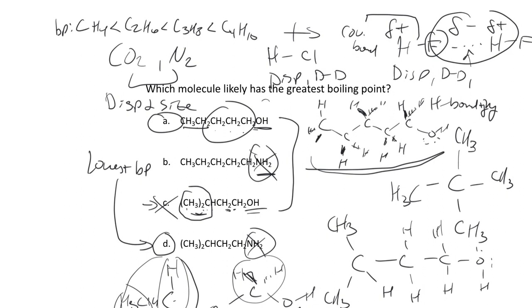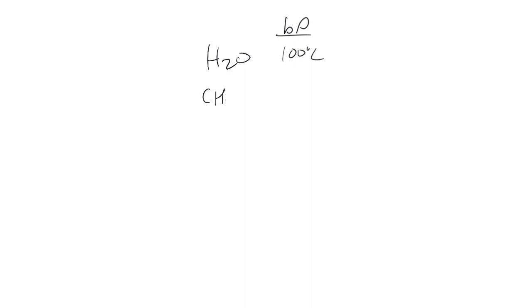Another thing to talk about: comparing water, which has a boiling point of 100 degrees C, with methanol. Methanol is really the same structure — we just replace a hydrogen with a group that doesn't hydrogen bond, but it's also bigger. The boiling point actually goes down to about 64 degrees C. I don't know if we could predict it, but once we see it we can sort of understand the trend.